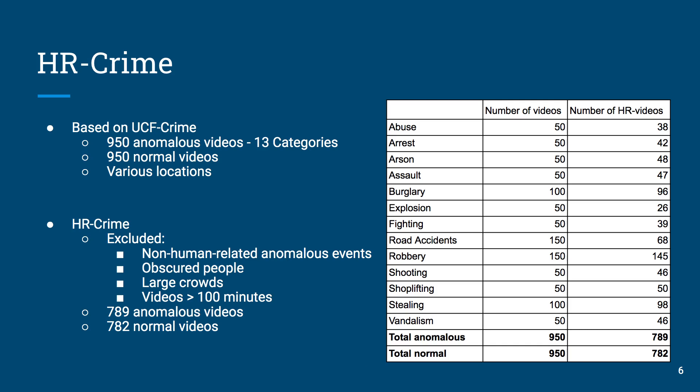The HR-Crime dataset is based on the UCF Crime dataset, consisting of 950 anomalous videos divided into 13 crime categories. In addition, there are 950 normal videos. The videos are filmed using different surveillance cameras in various locations around the world. However, only a subset of it is human-related. Therefore, for further human-related anomaly analysis, we extracted HR-Crime out of UCF Crime using a few guidelines.